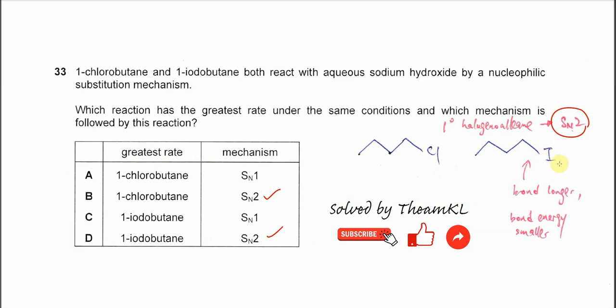Iodine is much larger than chlorine, so the bond length between C and I is longer. This means the energy needed to break this bond is less - the bond energy is smaller. So it's easier for these bonds to break and undergo reaction.